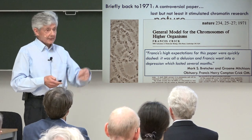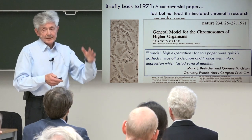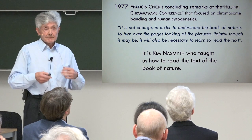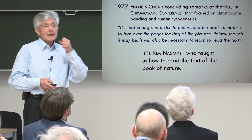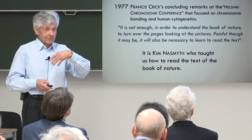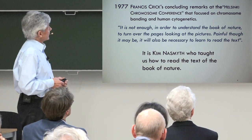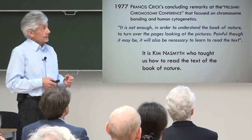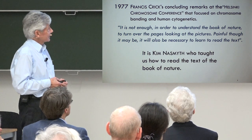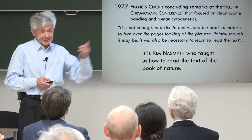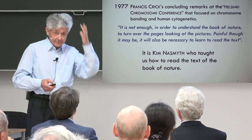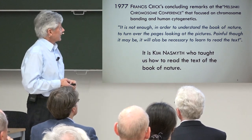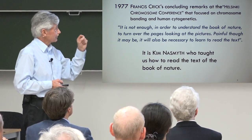I met Francis Crick a few years later; meanwhile he was no longer depressive, but he did not like a human cytogenetics conference he was attending. The organizers asked him to make concluding remarks, and this is what he said: 'It is not enough, in order to understand the book of nature, to turn over the pages looking at the pictures. Painful as it may be, it will also be necessary to learn to read the text.' This was 1977. I went home and thought I had to change my science. And it was really Kim who came to Vienna and taught us all how to read the text in the book of nature.